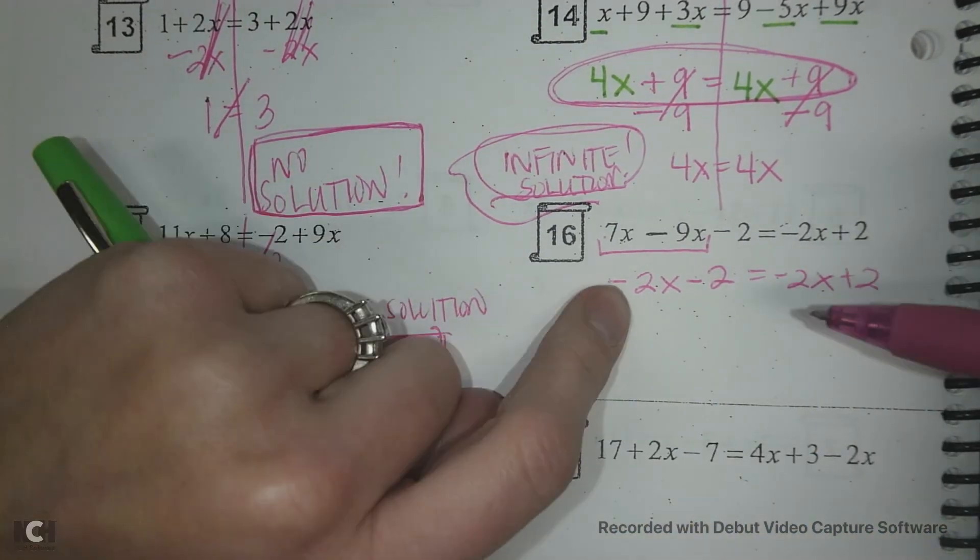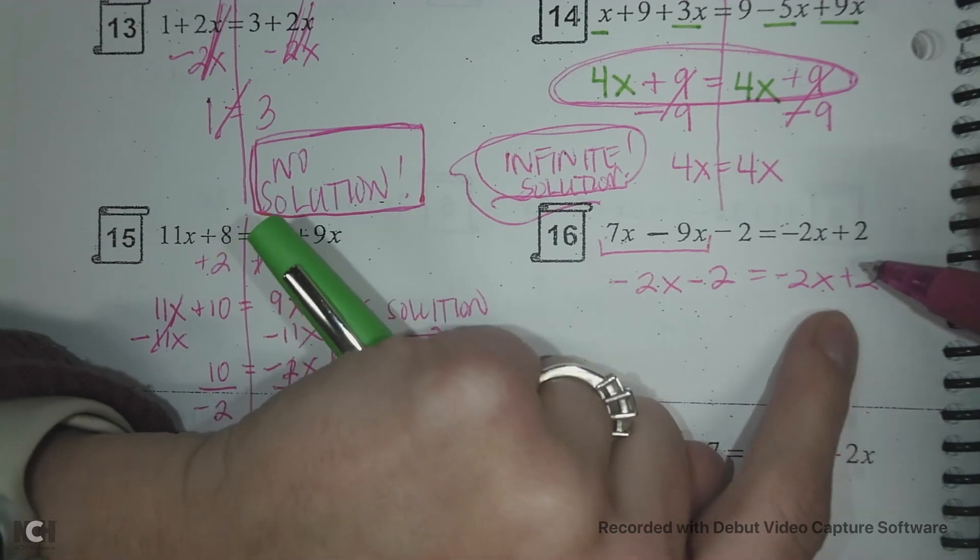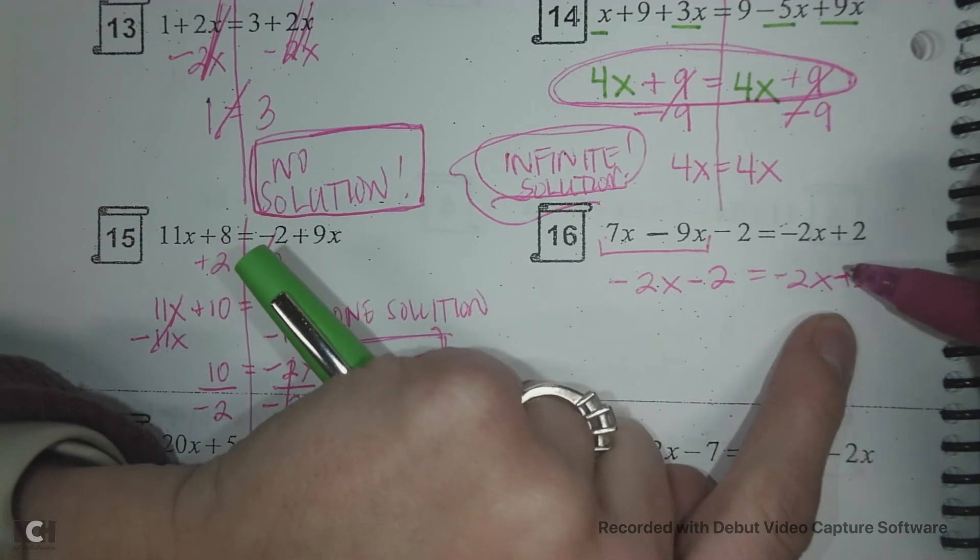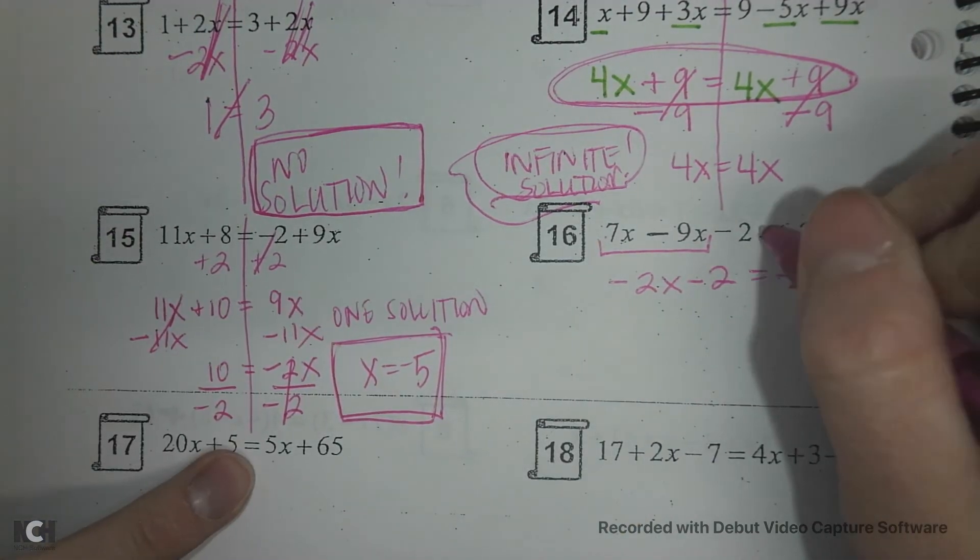If you see that we have negative 2x minus 2 equals negative 2x. Oh no. We can't stop here. Notice that my sign is different. It tricked you. Okay. So let's keep going.